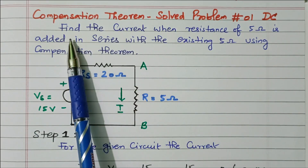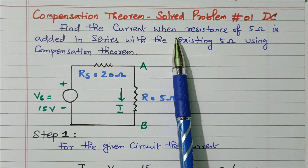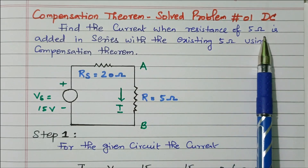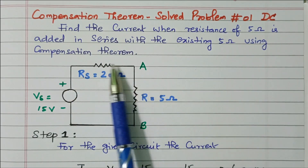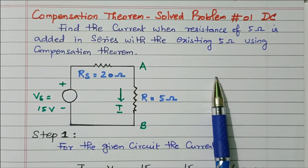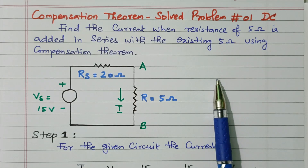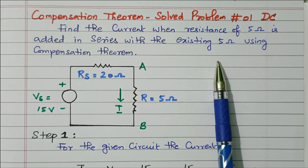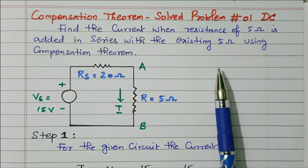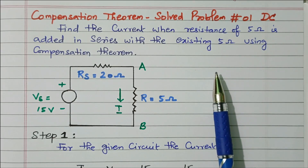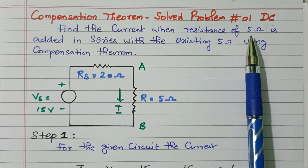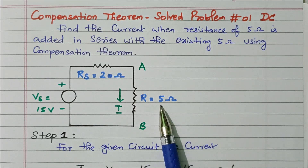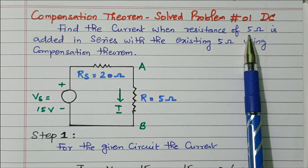We will see the statement of the problem: find the current when a resistance of 5 ohm is added in series with the existing 5 ohm using the compensation theorem. The compensation theorem states that while increasing the resistance value or impedance, there will be an opposing voltage and current identified by the compensation voltage Vc. Here we are increasing the 5 ohm resistor by another 5 ohm.